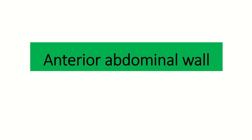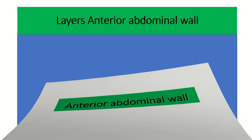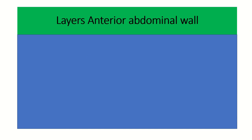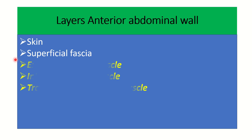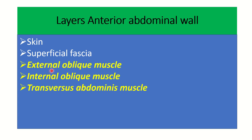Welcome to another lecture on the anterior abdominal wall. The layers of the anterior abdominal wall, starting from the outermost: first is the skin, then superficial fascia. After that, there are three important muscles — the external oblique muscle, internal oblique muscle, and transversus abdominis. In the abdomen, there is no deep fascia.